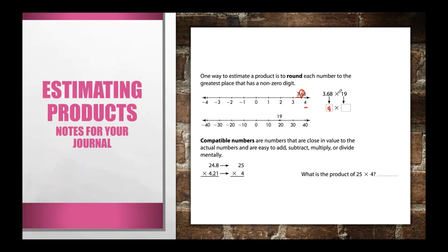Now we have 19 on the number line. Is 19 closer to 10 or 20? It is closer to 20, so we round it to 20. Looking at the digit in the greatest place, which is 1, and the digit to its right is 9 — that also tells us to round up. So we multiply 20 × 4. We know 4 × 2 is 8, and then we place our zero, giving us 80.